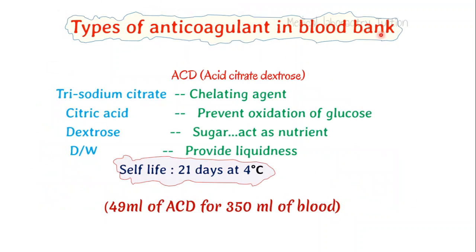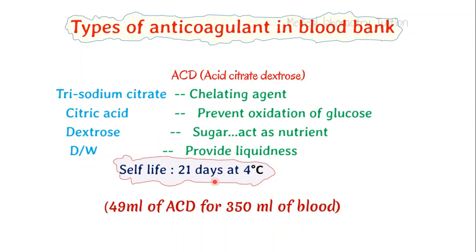Types of anticoagulant in the blood bank. ACD — acid citrate dextrose — is the most common. This is the core component. It contains trisodium citrate which acts as a chelating agent, citric acid which prevents the oxidation of glucose, dextrose which acts as a nutrient, and distilled water which dissolves the salts. If we take 49 ml of ACD for 350 ml of blood, we can store this blood for 21 days at 4°C.